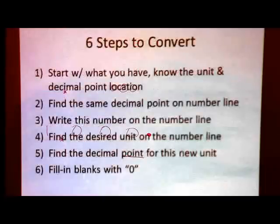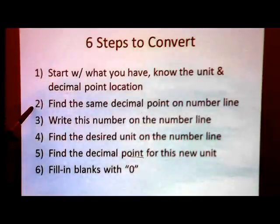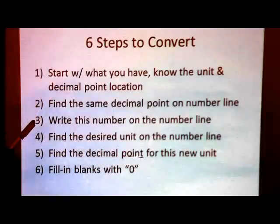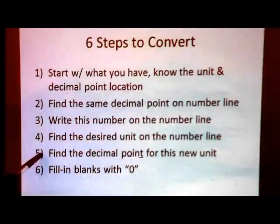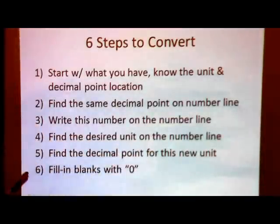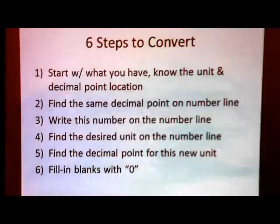Let's review the steps. Step one: start with what you have — know the unit and where the decimal point is. Step two: find that same decimal point on the number line. Step three: write the number you're given on the number line. Step four: find the desired unit on the number line. Step five: find the decimal point for that new unit — always to the right. Step six: fill in the blanks in between with zero. That's it — those are the steps you need to take.